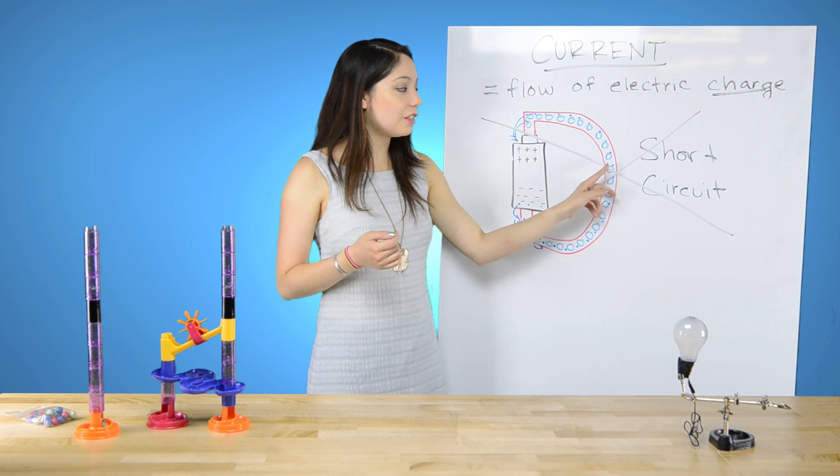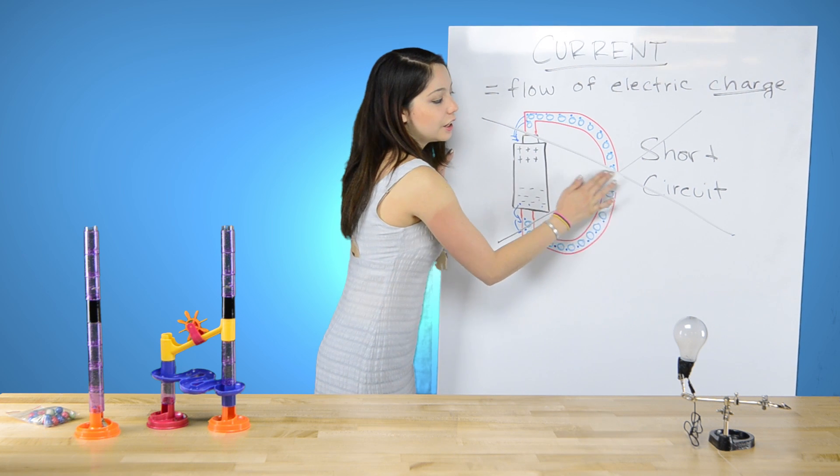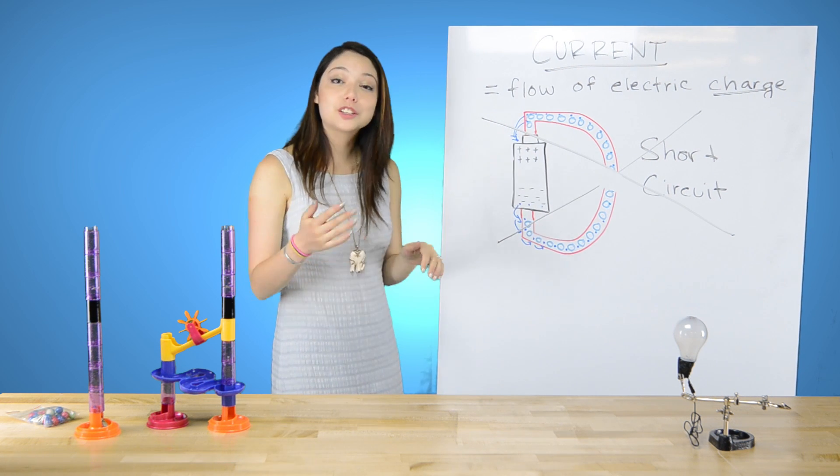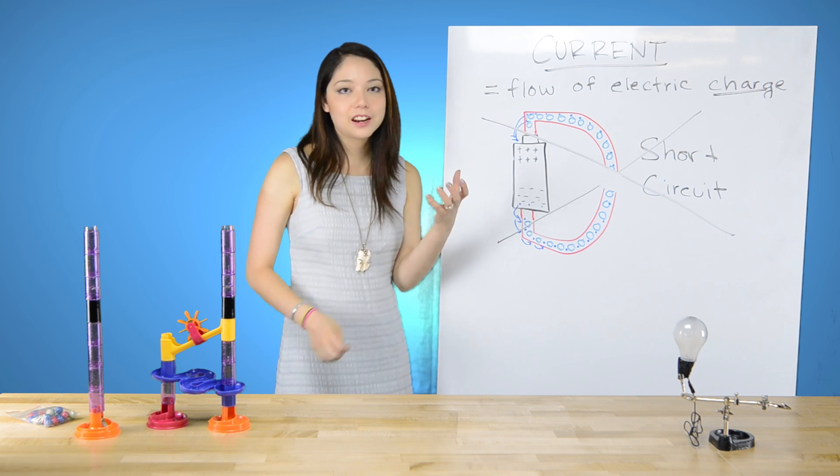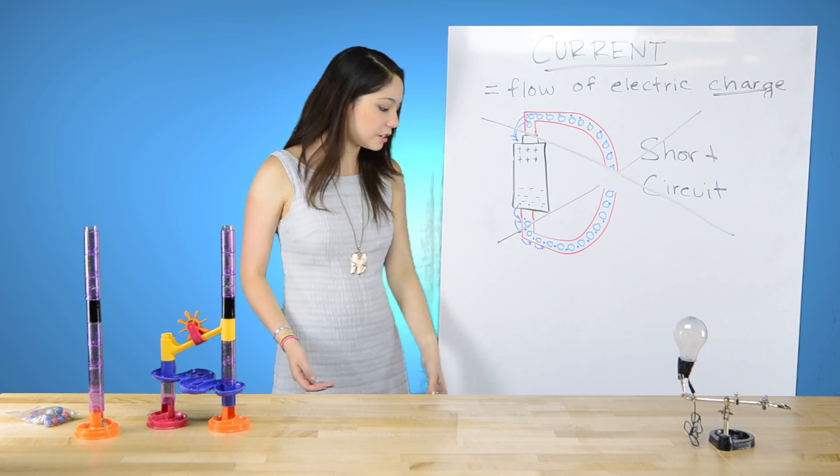If you had a light bulb somewhere in here, those electrons would then go power your light bulb or your motor or whatever that actuation is. And that is, you know, the purpose of current.